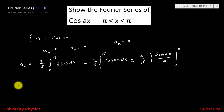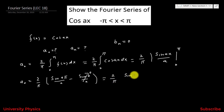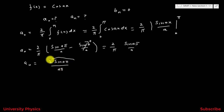After putting in the limits, we get a0 = 2 divided by pi times [sin(aπ) divided by a minus sin(0) divided by a]. Since sin(0) = 0, we get 2 divided by pi times sin(aπ) divided by a. This simplifies to a0 = 2 sin(aπ) divided by (aπ).